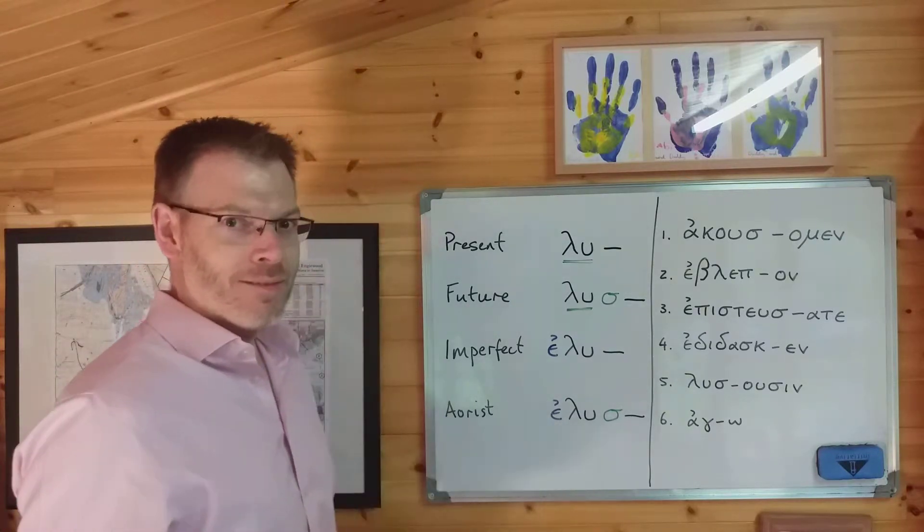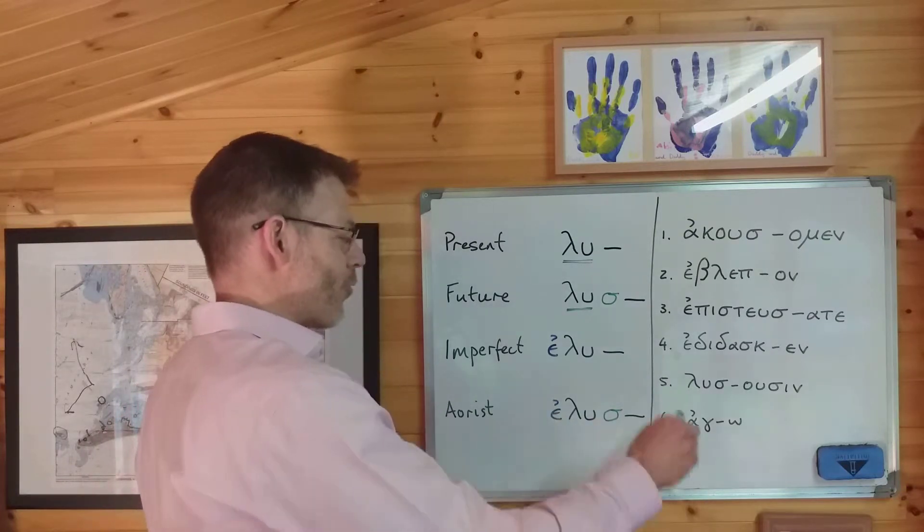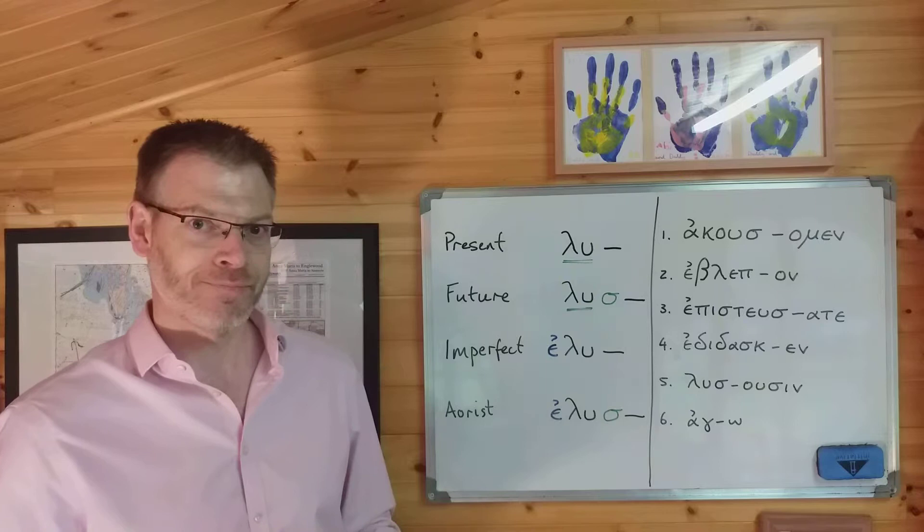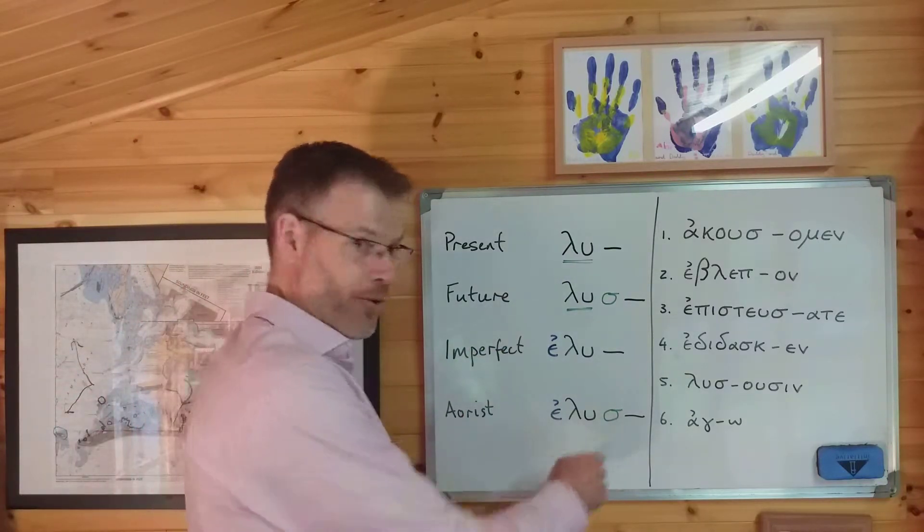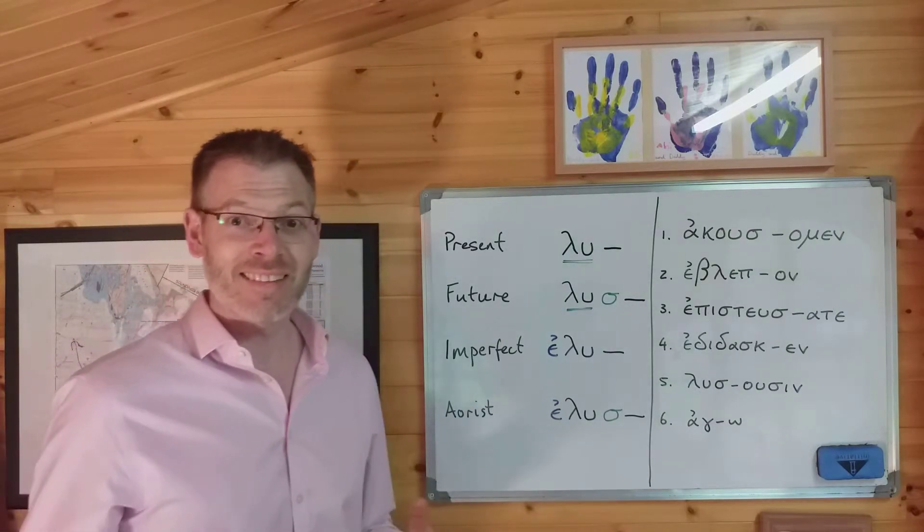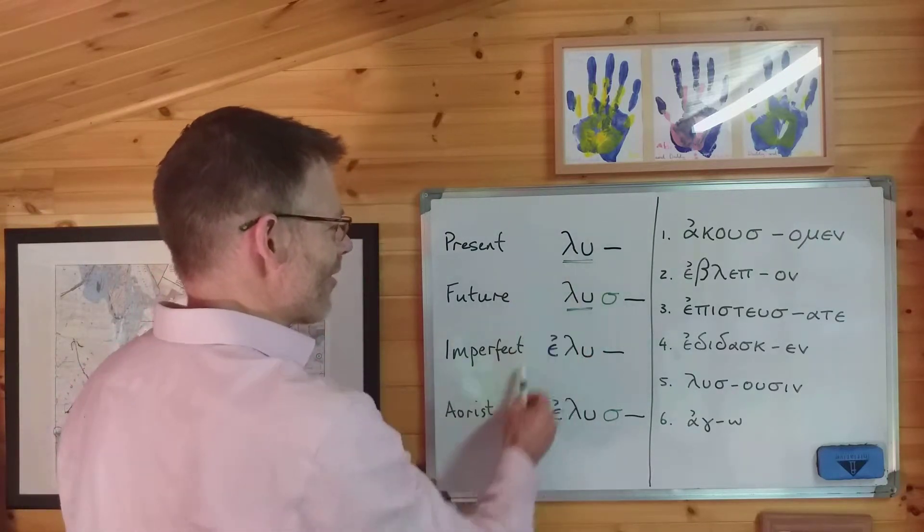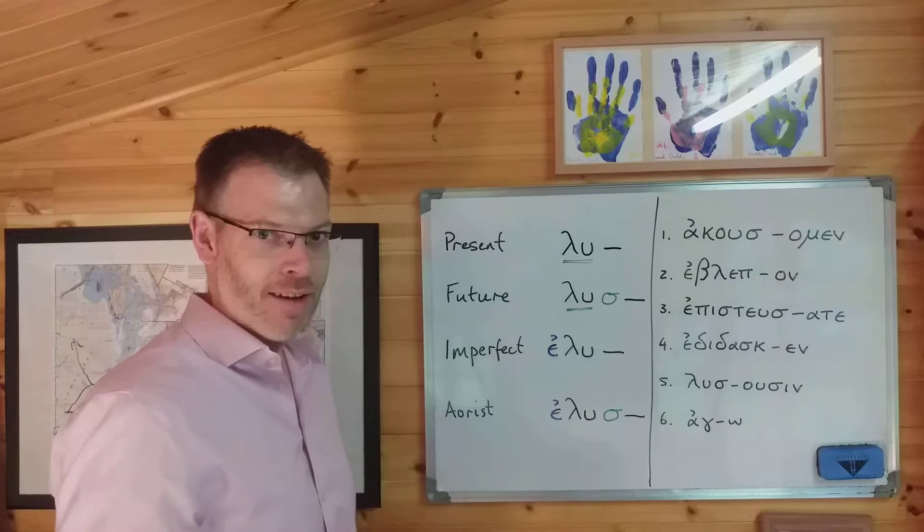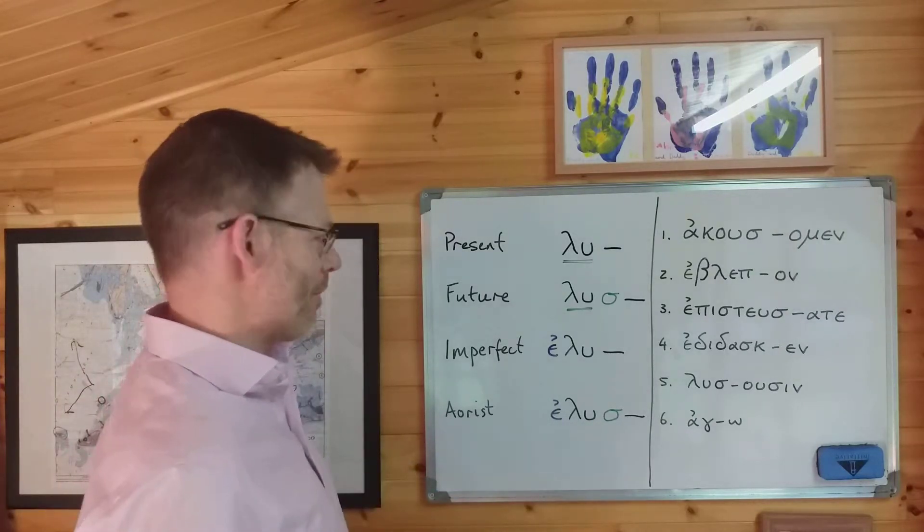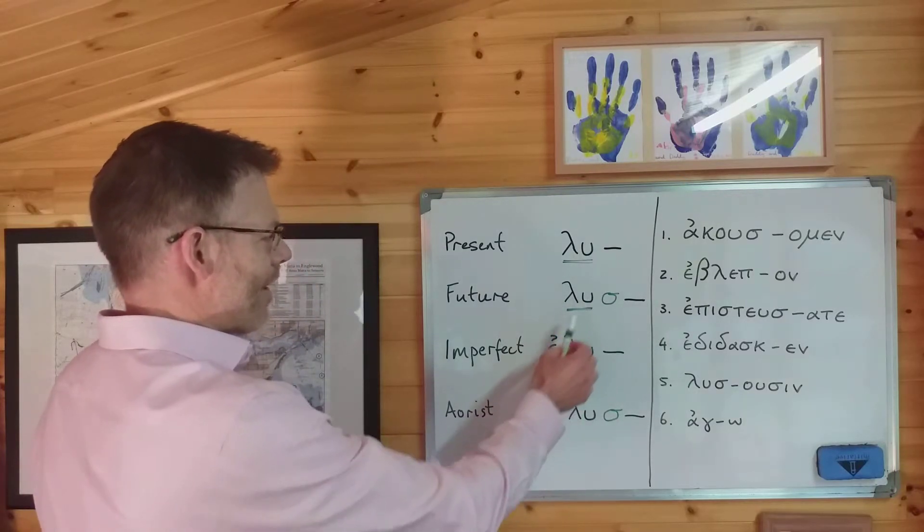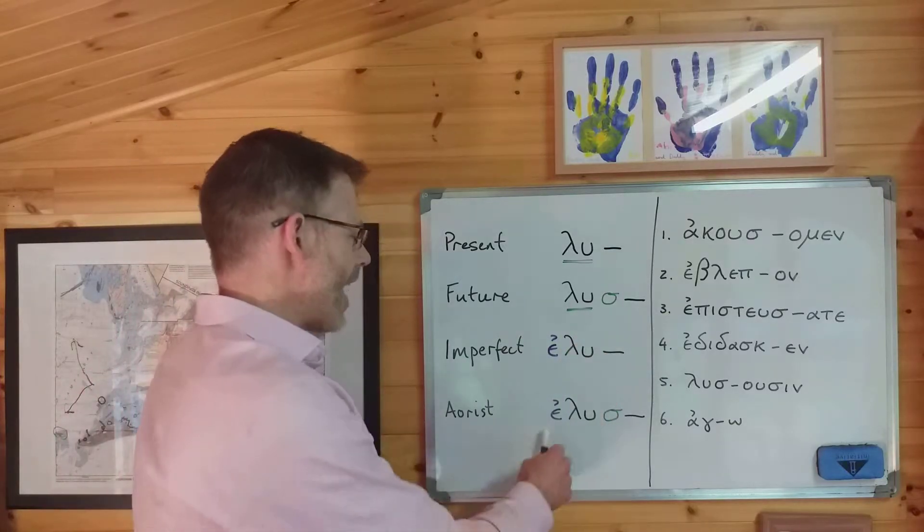It's an epsilon that comes before the stem. It's called an augment because it augments the length of the word I guess. So epsilon augment before the stem means it's imperfect. Sigma suffix after the stem means it's future. Easy. What could go wrong? Well only one thing, that if you spot both the epsilon augment and the sigma suffix, then you know it's not future, it's not imperfect, it's aorist. Aorist has both.